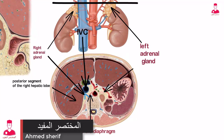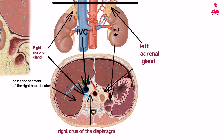The left adrenal gland lies anteromedial to the upper pole of the left kidney. It is located in a triangle formed by the aorta, pancreatic tail, and left kidney. It commonly appears as a triangular or Y-shaped configuration.